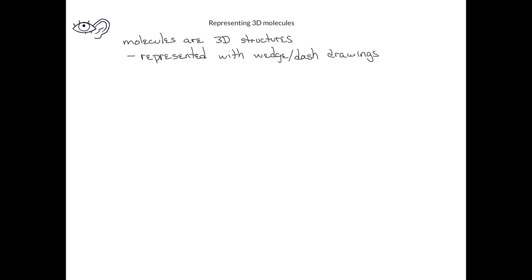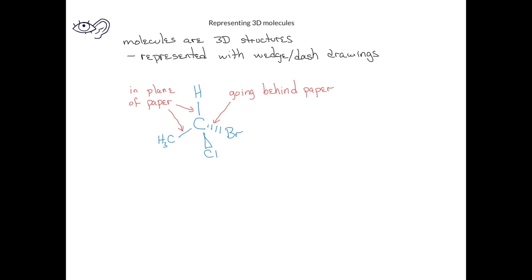You may have noticed in the previous slide that I introduced some new kinds of lines to the chemical structures. These structures are called wedge-dash drawings. In a structure, straight regular black lines are considered to be in the plane of the paper. When we have a dashed bond, that bond is considered to be going behind the paper. When we have a dark wedge bond, that bond is considered to be coming out of the plane of the paper toward the viewer. These wedge-dash bonds help us to visualize three-dimensional chemical structures.